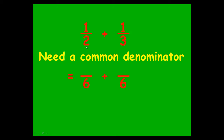What have you done to two to make six? You've multiplied it by three, so you do the same to the top: one times three is three. For the second fraction, you multiply three by two to get six, so do the same to the top: one times two is two. Now you're good to go — three sixths plus two sixths makes five sixths, and that's your final answer.